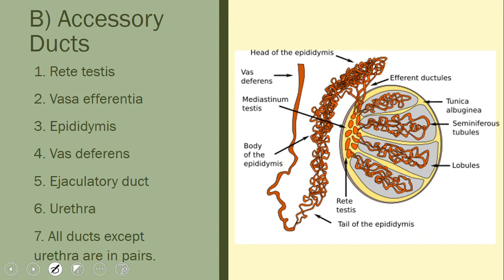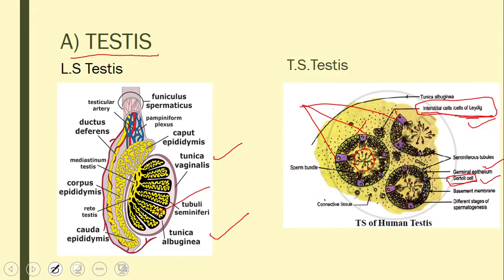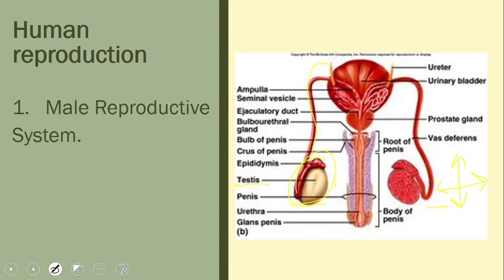The three parts of the epididymis have Latin names: the head is called caput epididymis, the body is called corpus epididymis, and the tail is called cauda epididymis. The epididymis carries sperms to the vas deferens, which then enters the body, coils around the ureter, and opens into the ejaculatory duct and then the urethra.